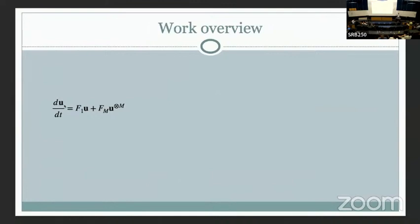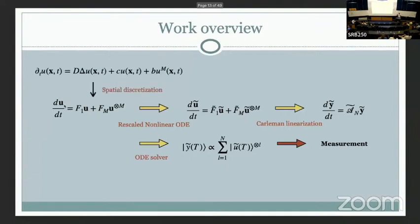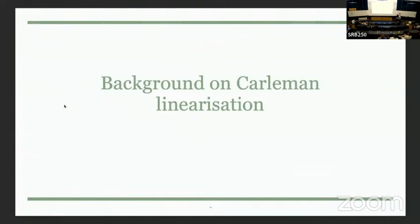This is the work overview. We start with a set of nonlinear ODE problems, then show the need for rescaling. After rescaling, we perform Carleman linearization. Once you have the linearized system, you apply ODE solvers and then extract the component of interest. The same steps can be followed starting from a PDE: start with a scalar PDE, perform spatial discretization, which gives a set of ODEs, and then follow the same steps — with some extra care to ensure the solution is stable.